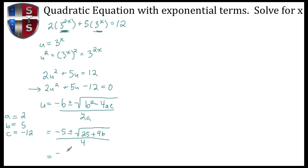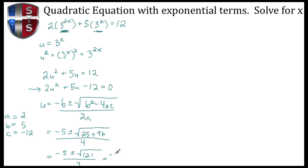Continuing to simplify: I have negative 5 plus or minus the square root of 25 plus 96, which is 121, all divided by 4. The square root of 121 is a perfect square, so that comes out to be 11. So we have negative 5 plus or minus 11, divided by 4.